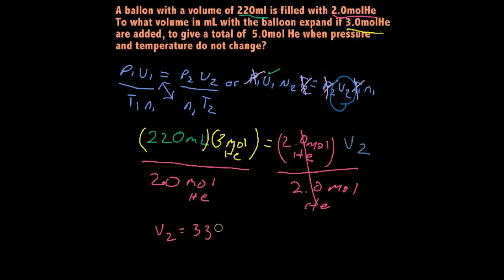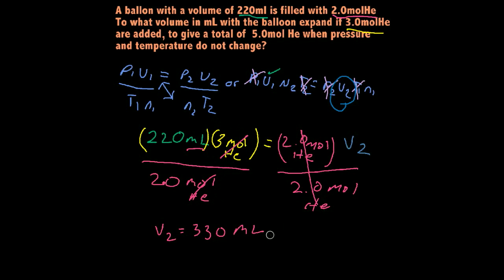So our V2 equals 330. Moles cancel out, so the answer is in milliliters — 330 milliliters. That's two significant figures. We had two significant figures in each value, so it's already in the right significant figures. That's how you use Avogadro's Law to solve for volume or moles.